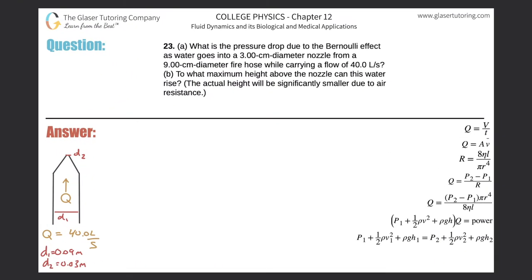Number 23, letter A. What is the pressure drop due to the Bernoulli effect as water goes into a three centimeter diameter nozzle from a nine centimeter diameter fire hose while carrying a flow of 40 liters per second? We are tasked to find the pressure drop and we have a flow rate of 40 liters per second.